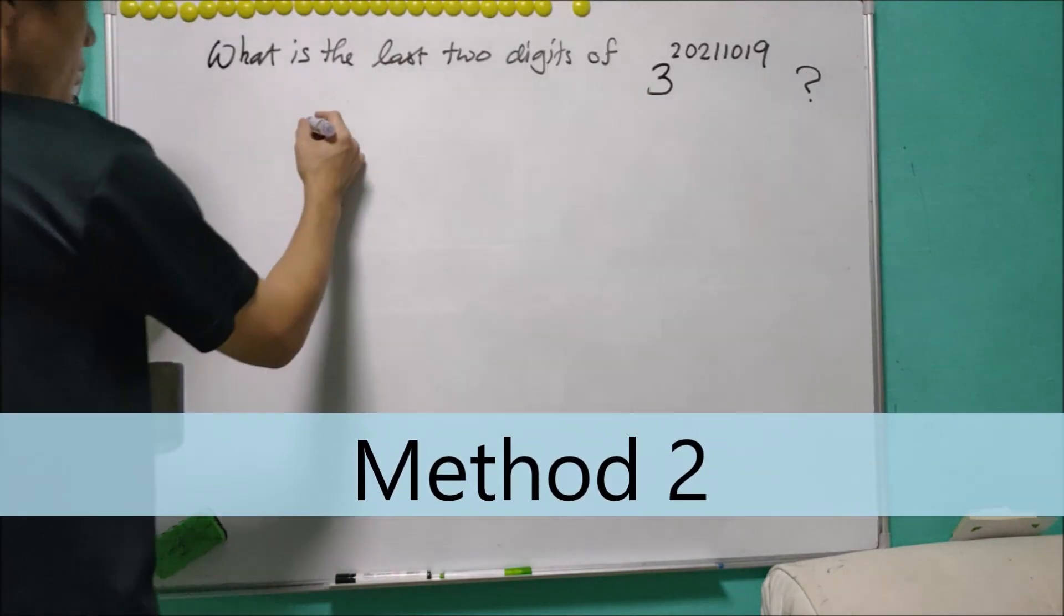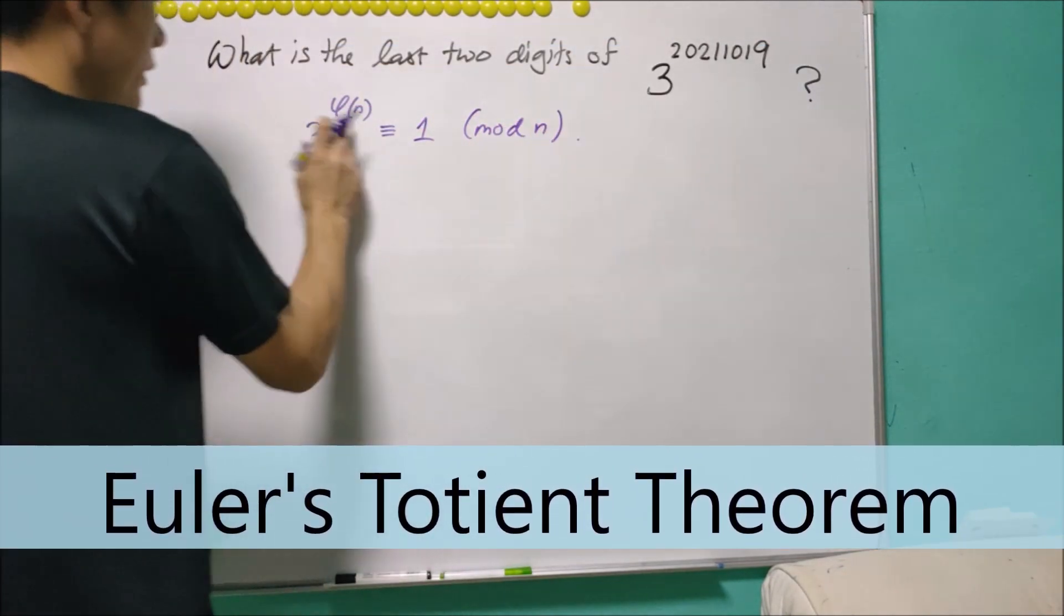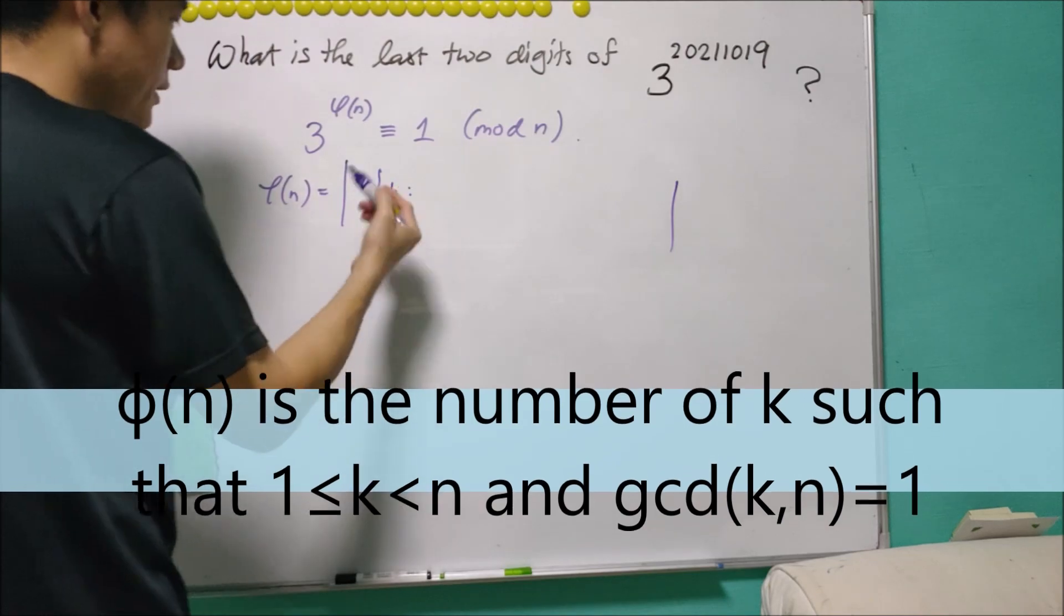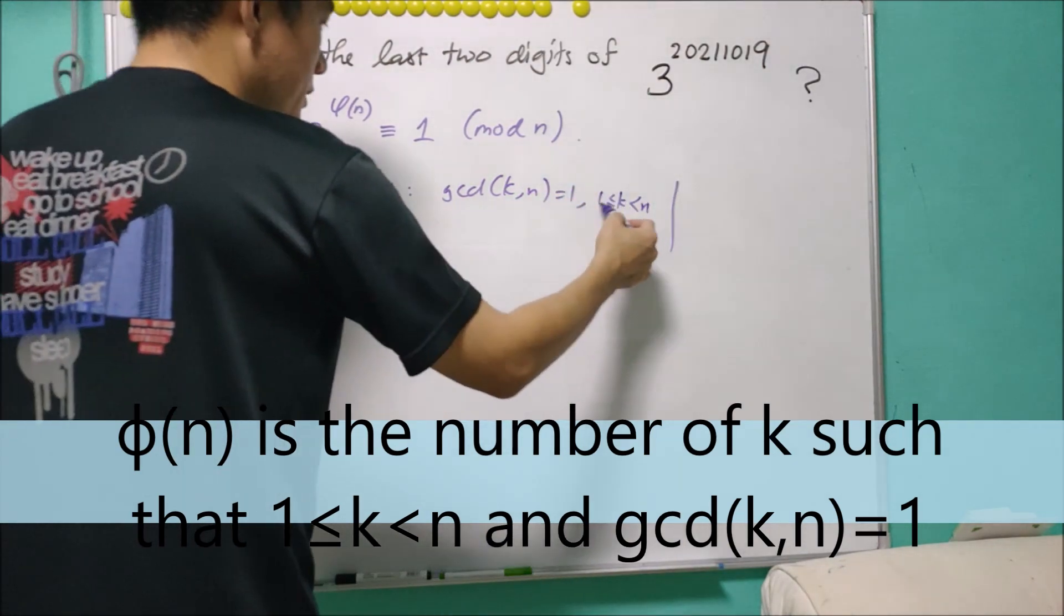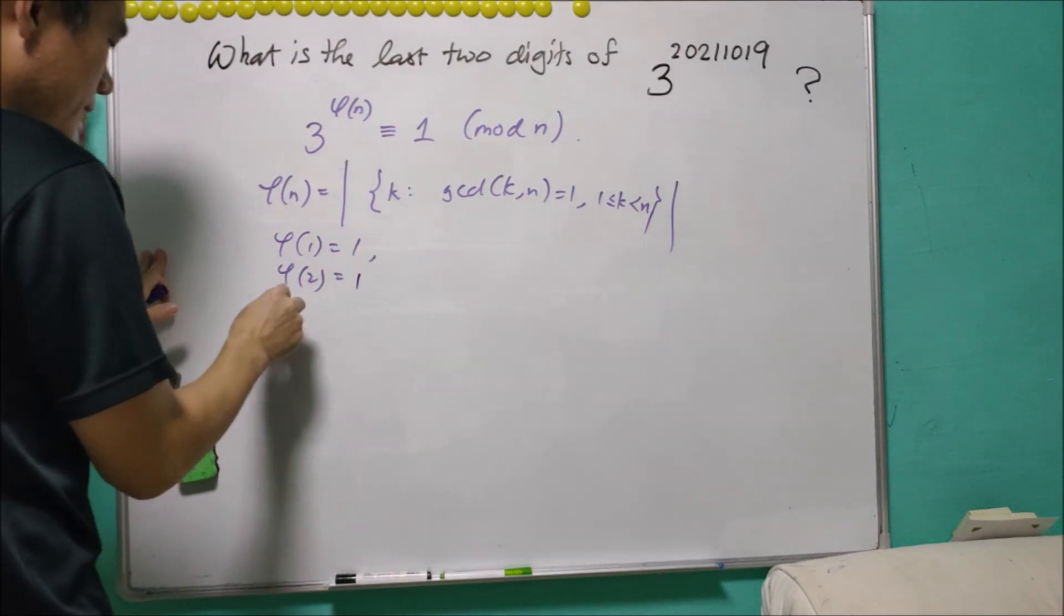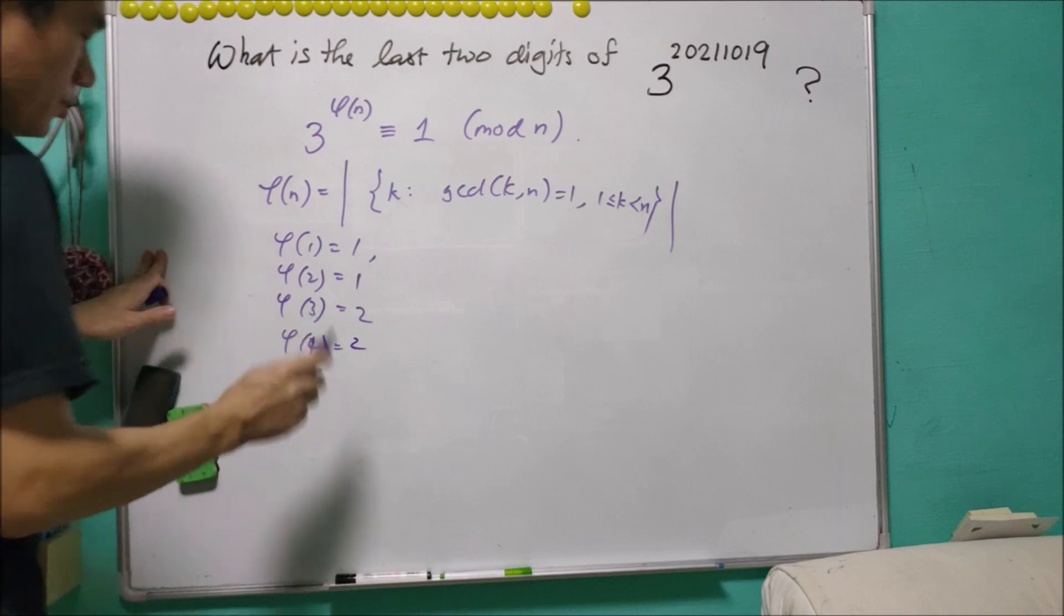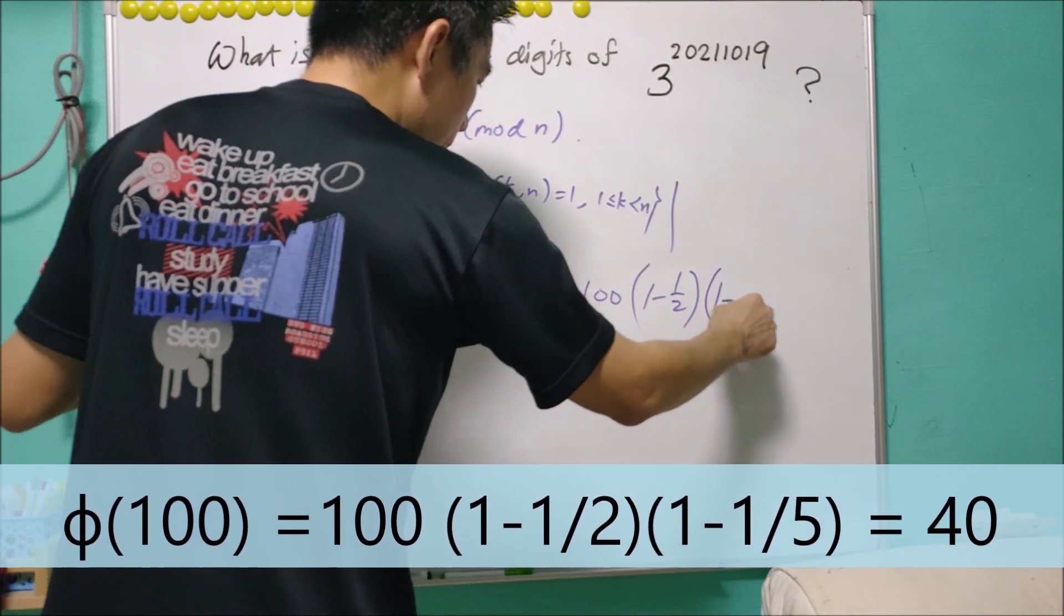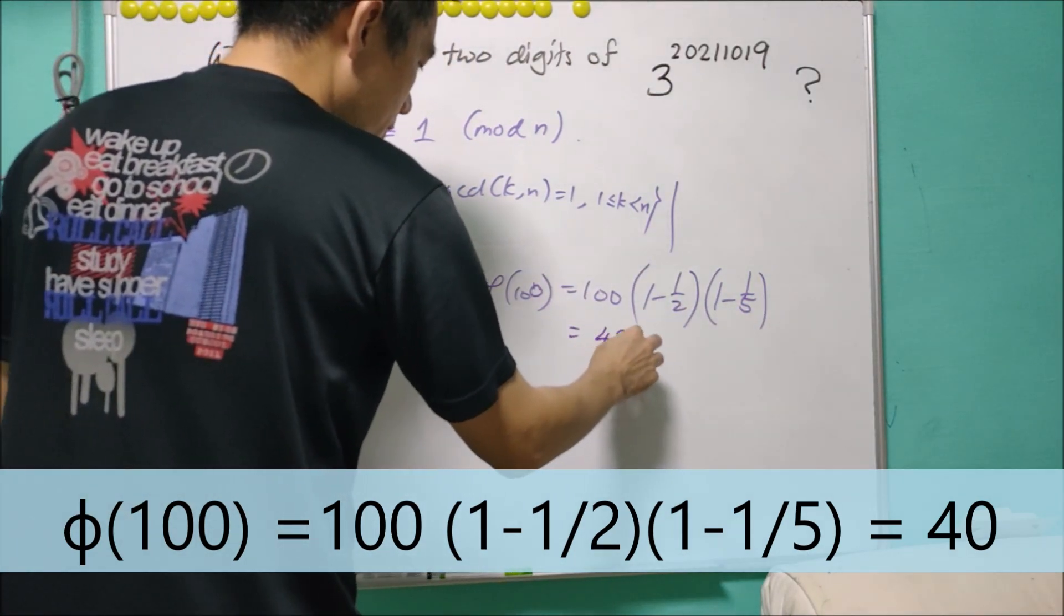By a known result, 3 to the power of φ(n) is congruent to 1 mod n. What is the meaning of φ(n)? φ(n) is a number in the set containing k, where the GCD of k and n is equal to 1, where k is between 1 and n. So for example, φ(1) equals 1, φ(2) equals 1, φ(3) equals 2, φ(4) equals 2, and so on and so forth. The formula for φ(100) is 100 times (1 minus 1 over 2) times (1 minus 1 over 5), where 2 and 5 are prime factors of 100. And in this case, we have 40.